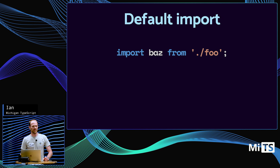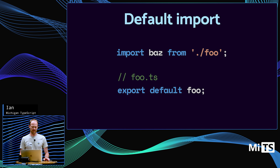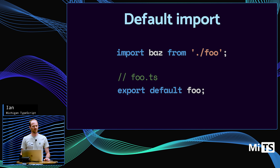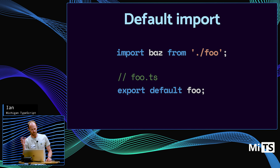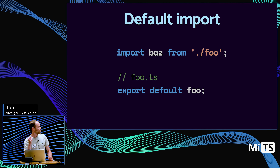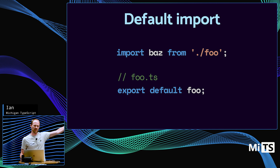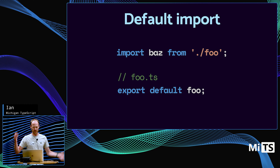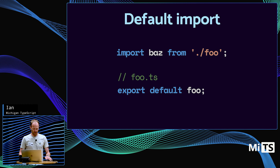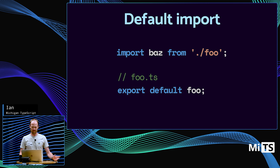Or you can have a default import. Maybe foo.ts has an export default foo. Each file can only have one default export at most. Notice you can rename them. I hate default exports because of this — they get very confusing if you name them differently than they were intended. So I tend to avoid them, but different strokes, I guess.